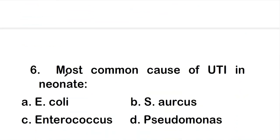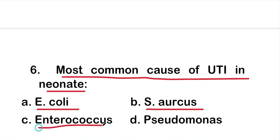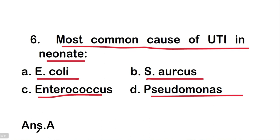Question 6: What is the most common cause of urinary tract infection (UTI) in neonates? The options are E. coli, Staphylococcus aureus, Enterococcus, or Pseudomonas. The right answer is option A: E. coli. E. coli is the most common cause of UTI in neonates.